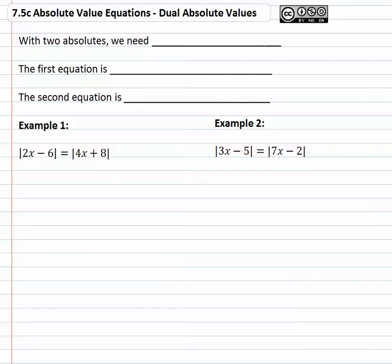Another type of equation we may be interested in solving is an equation that has two absolute values in the problem. And just like with any other absolute value equation, with two absolute values we need two equations.